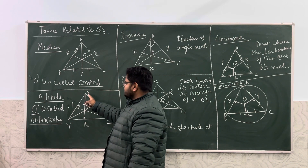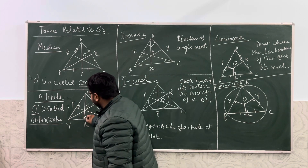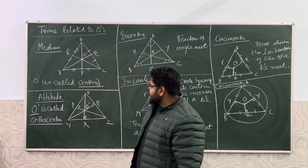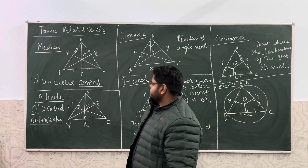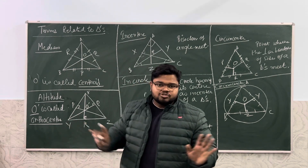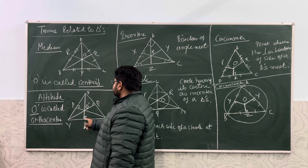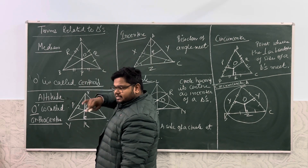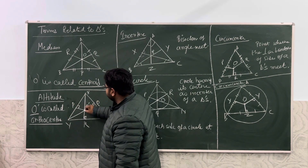After median, we have the altitude of a triangle. Altitude also originates from the vertex, but altitude is a perpendicular — 90 degrees — from the vertex to the opposite side. Angles at U and R are all at 90 degrees. Note that YR is not equal to RZ; there is no such guarantee. In a median, BP is equal to PC, meaning the opposite side is divided into 2 equal parts, but that does not apply to altitude.